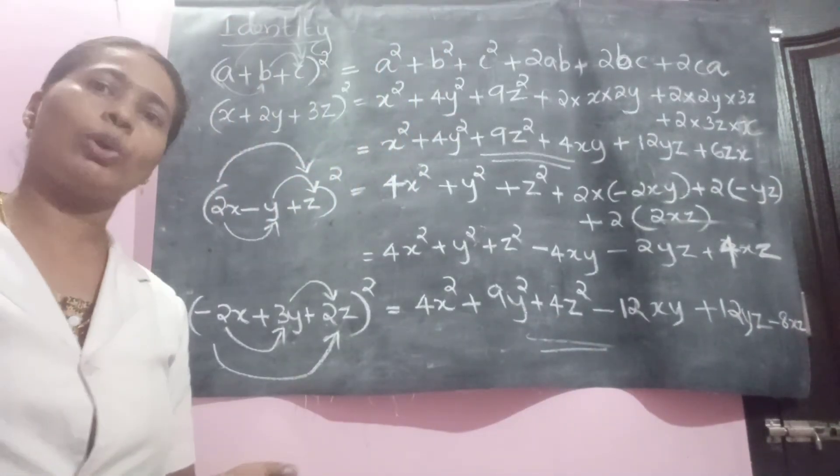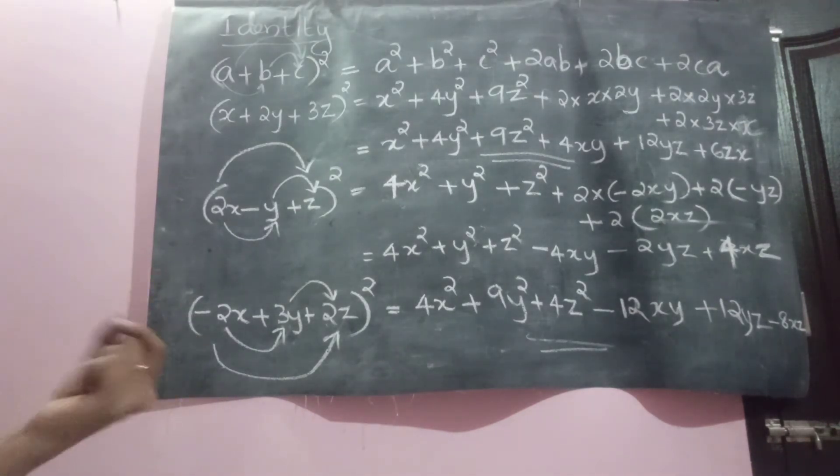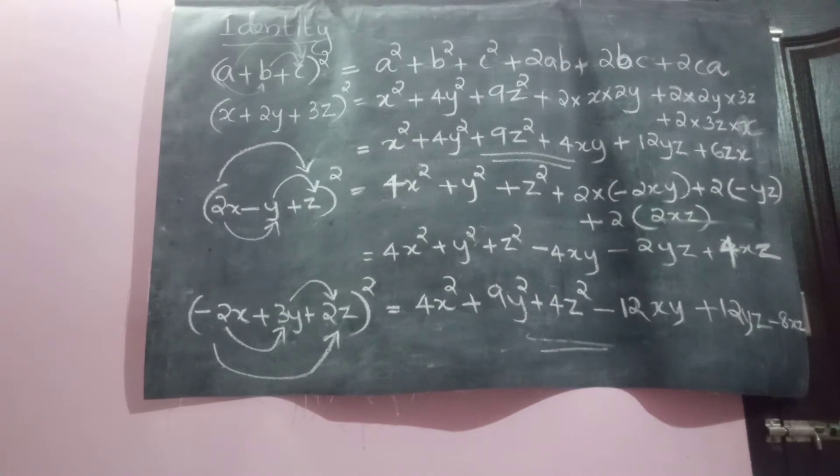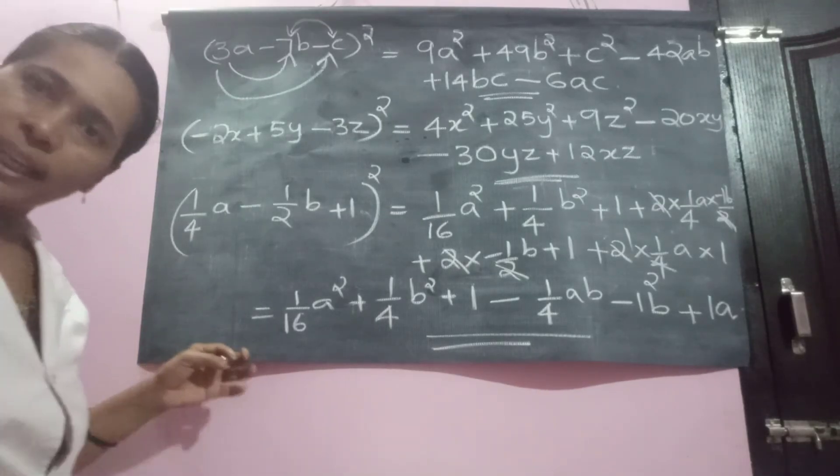Very easy for you. Square of first term. Square of second term. Square of third term. Then product of first two, double it. Product of next two, double it. And product of first and last, then double it. Let us move to some other questions of the same time.